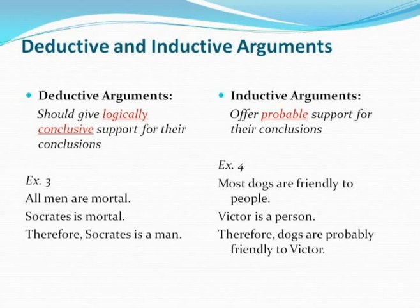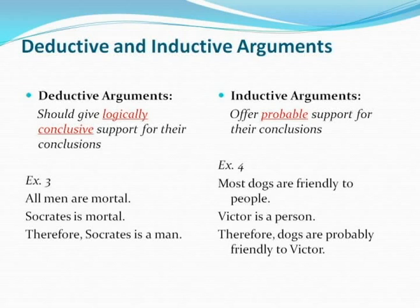In the first example, we could logically conclude that Socrates is mortal based on the premises that all men are mortal and that Socrates is a man. We cannot conclude, as we see in example three, that Socrates is a man based on the premises that all men are mortal and that Socrates is mortal. Being mortal is a quality of men, but it is also a quality of other types of beings. Being mortal is not sufficient for us to conclude that Socrates is a man, even if all men are mortal — Socrates could be a woman or a lizard and still be mortal.